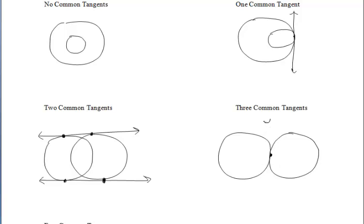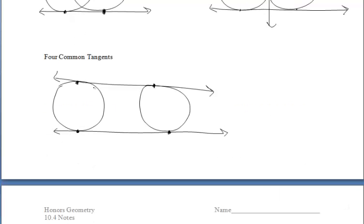Three common tangents, the circles would have to be externally tangent because we could draw one tangent through that point. And then similarly to what we did with the two common tangents, we can draw those outer tangents there, the external ones above and below.